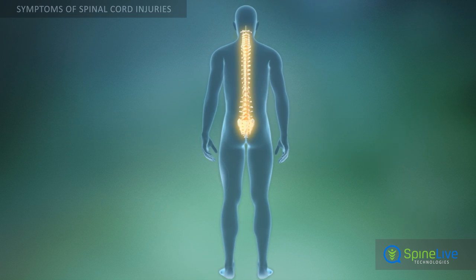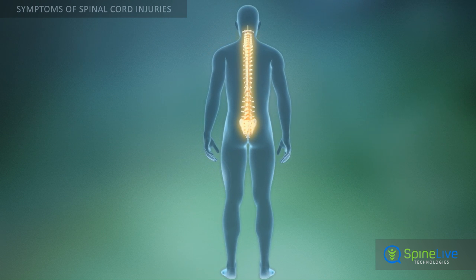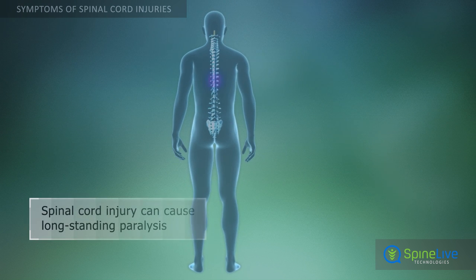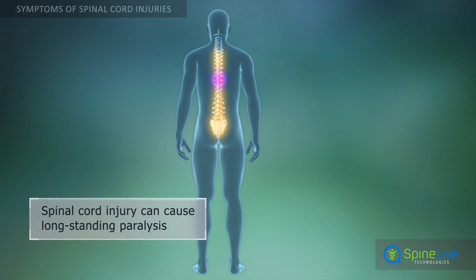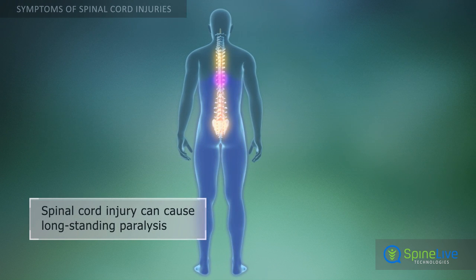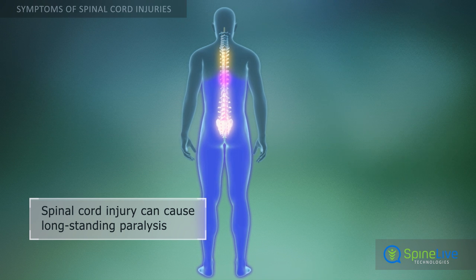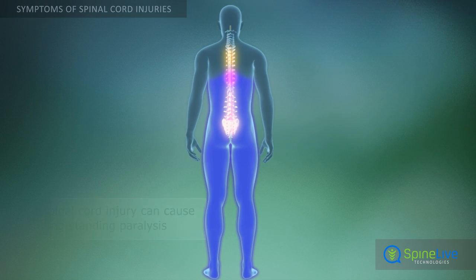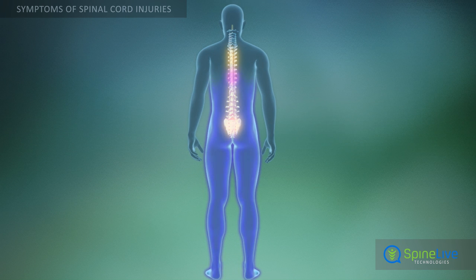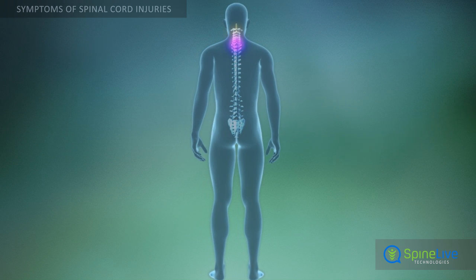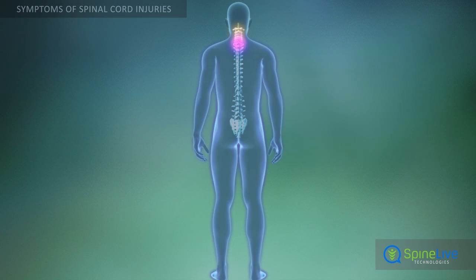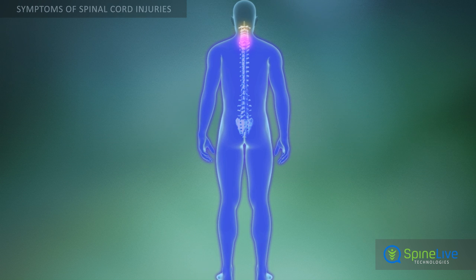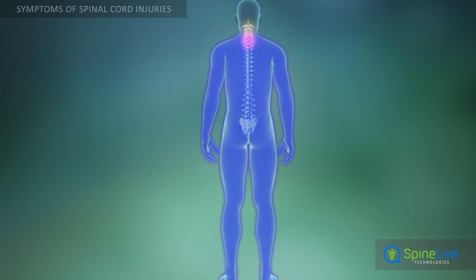Short-term paralysis may also occur. If spinal cord injury causes compression or rupture of the spinal cord, long-standing paralysis may occur. Loss of motor and sensory functions in the lower trunk and legs occurs due to injury of the lumbar spine, and total paralysis occurs due to trauma of the cervical spine.